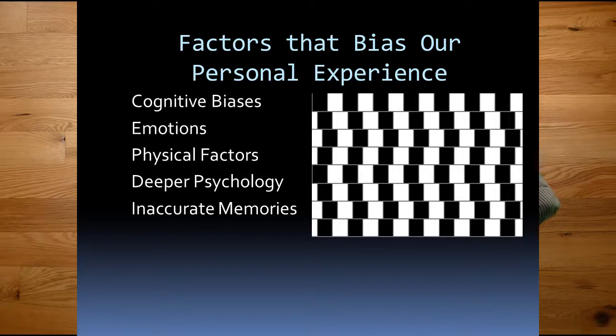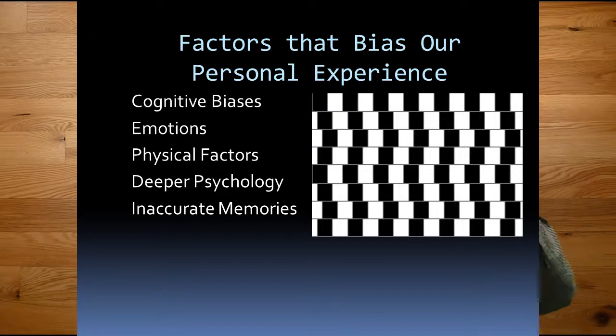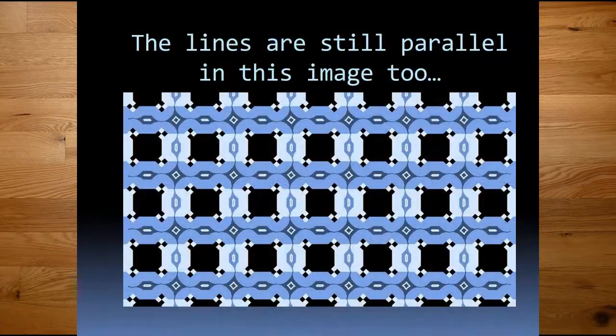These optical illusions show lines that seem curved and not parallel, but they actually are parallel. No matter how many times you convince yourself by measuring, your mind keeps playing tricks on you because of where the black squares are placed. Even worse is another example where we have parallel lines, but because of the placement of other figures, it really seems like those lines aren't straight — and yet they're perfectly straight. Our brains are constantly messing with us. Even though our experience is the most immediate source of info we have, it's highly, highly biased.